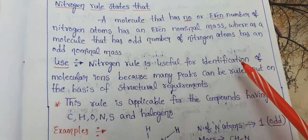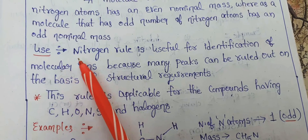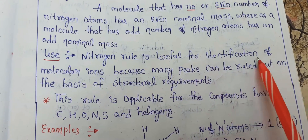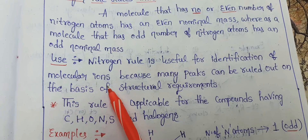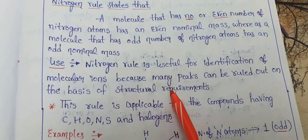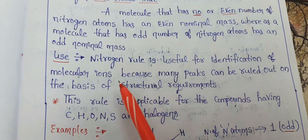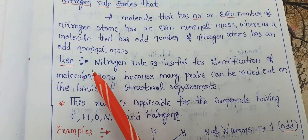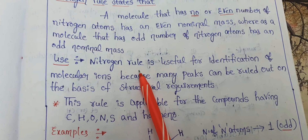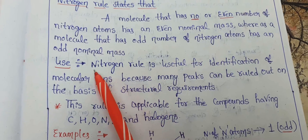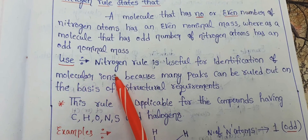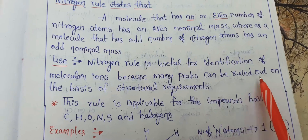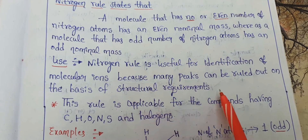The nitrogen rule is useful for identification of molecular ions, because many peaks can be ruled out on the basis of structural requirements. By using this nitrogen rule, we can identify the molecular ions.